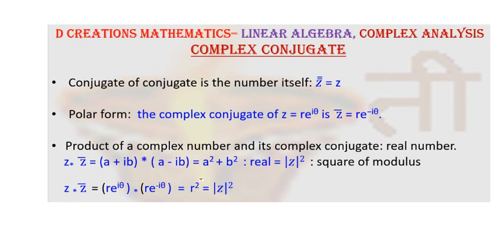You can visualize it more clearly in polar form. If re^(iθ) is the basic complex number, if you multiply it by its complex conjugate which is re^(-iθ), these two terms will cancel out. You will get r², which is basically |z|² because you know that r is the modulus.